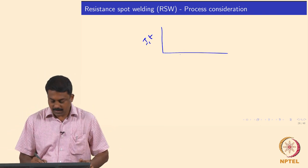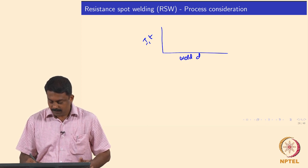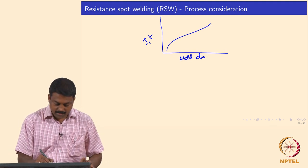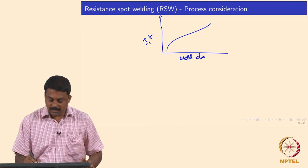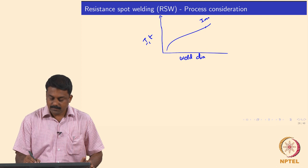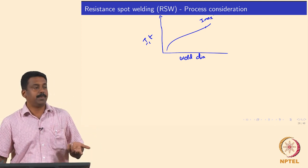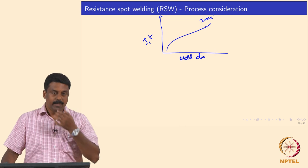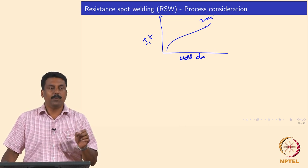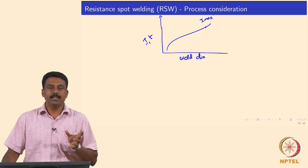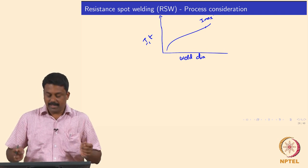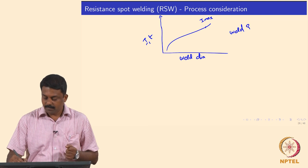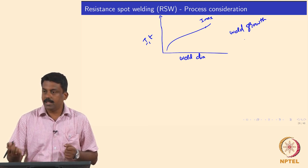We looked at I_t as a function of weld nugget diameter. Generally the curve goes like this in a typical application, so we can identify the maximum current for a given time — that is I_max. I_max determines the expulsion or splashing condition. Guidelines for automotive industries generally say that the weld nugget diameter should be 4 times the square root of thickness — that is the ideal weld nugget diameter. So from the weld growth curves you can identify the critical current and time needed to achieve the required weld nugget diameter.